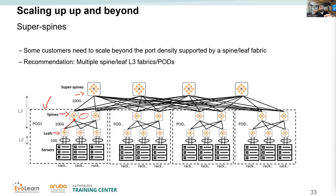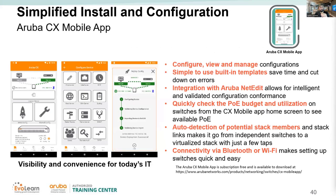The CX platform physical switch comes with a USB stick. You insert the USB stick into the switch, connect to it from your mobile device, and download an app. That app can perform initial configuration including switch name, stacking, VLANs, and more. This app can also be integrated with NetEdit to automate certain provisioning processes.